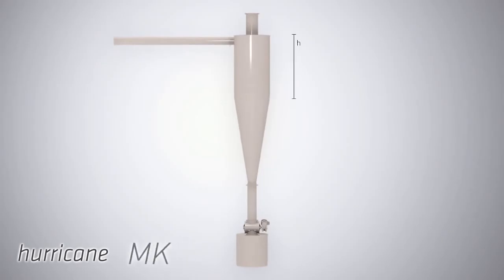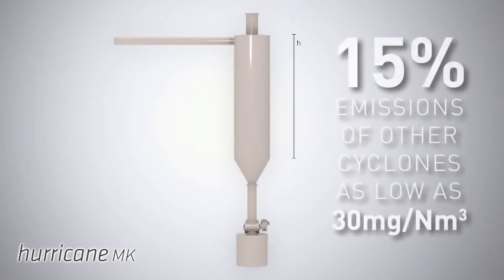Agglomeration is maximised with the new developed Hurricane Mk cyclones. Emissions can be under 15% of those of other cyclones, being as low as 30mg per normal cubic metre for many industrial processes.